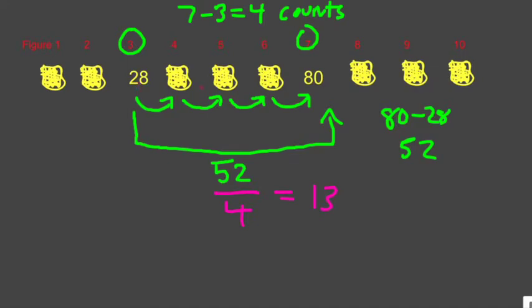So let's see if it works. 28 plus 13 is 41. 41 plus 13 is 54. 54 plus 13 is 67. 67 plus 13 is 80. That works. Plus 13 each time.